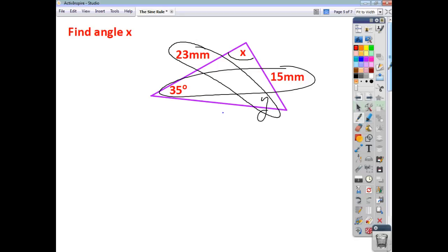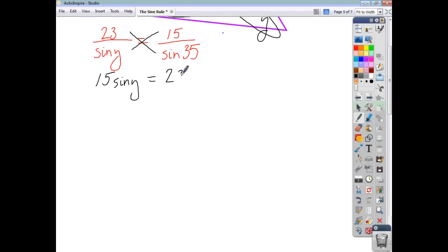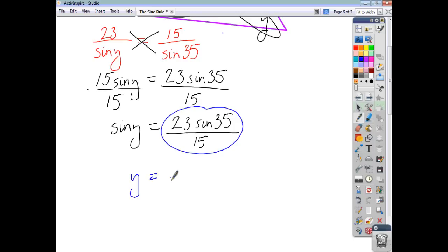Let's find angle y. So we'll say 23 over sine y, that's going to be equal to 15 over sine 35. Getting everything onto one level leaves us with 15 sine y, and that's going to be equal to 23 times sine 35. Divide everything by 15 so that you're left with sine y on its own. So sine y is equal to 23 sine 35 over 15. And then now that you know what sine y is, you just do inverse sine of this to find y, and you end up with y being 61.6 degrees.